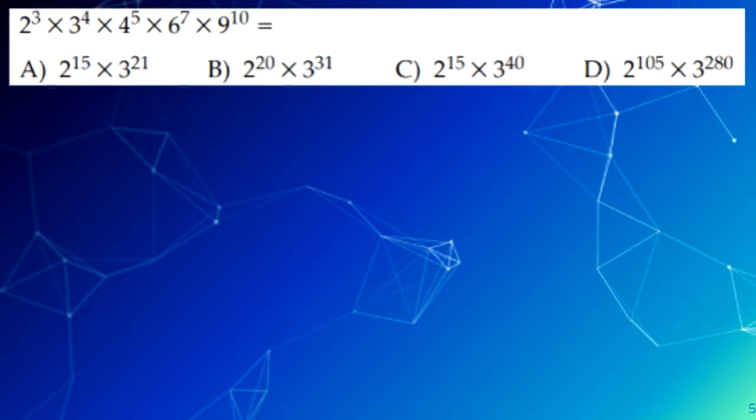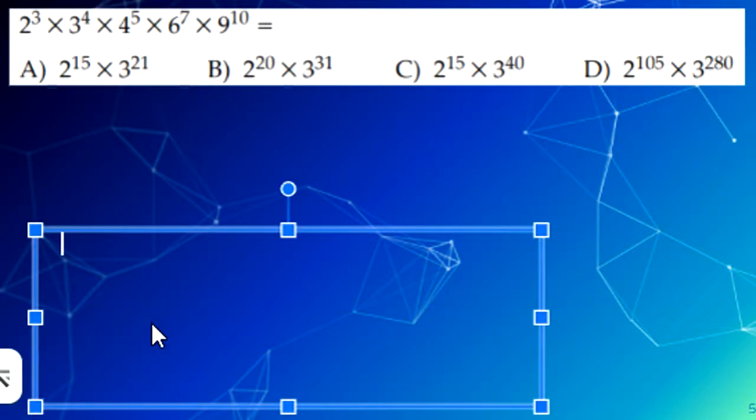If we simplify it, we would get 2 to the power of 3, times 3 to the power of 4, times 2 to the power of 10, times in parentheses 2 to the power of 7 times 3 to the power of 7, and then in parentheses times 3 to the power of 20. That would be the equivalent of the equation right there, but with the base numbers only of 2 and 3. If we add up all those powers, we would get 2 to the power of 20 times 3 to the power of 31. So our answer would be B.